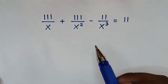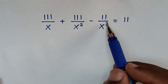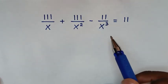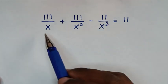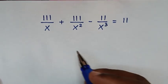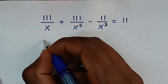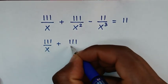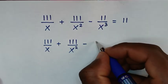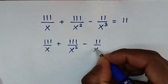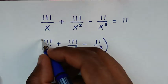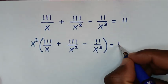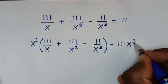In the first step, we'll start by removing these denominators. They have the same base of x, but the largest power is x power 3. So we'll multiply by x power 3 on both sides. From the left side, which is 111 over x plus 111 over x squared minus 11 over x power 3, we'll multiply by x power 3, and on the right side we also multiply by x power 3.